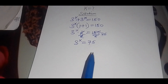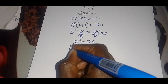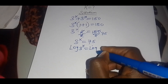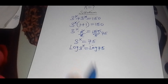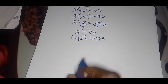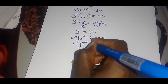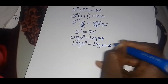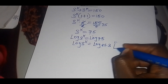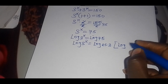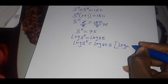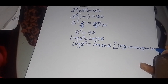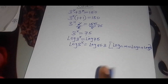To solve for the value of k, we introduce the logarithm. We have log(3 raised to power k) equals log(75). Now we can write 75 as 25 multiplied by 3. Applying the log identity that states log(n times m) equals log(n) plus log(m), we apply this identity.